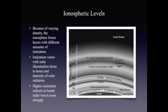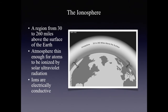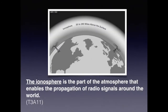The ionosphere is dynamic in nature — sometimes predictable and other times not. The F1 and F2 layers will combine at night. Solar storms perturb or alter the shape of the ionosphere, and solar rays also increase the number of ions. The more ions there are, the more it will bend or refract radio waves. The ionosphere region extends from 30 to 260 miles above the Earth's surface. Because the atmosphere is so thin in that region, ultraviolet radiation causes ionization — thus the name ionosphere. Note that ions are electrically conductive. For the exam, the ionosphere is the part of the atmosphere that enables the propagation of radio waves around the world.